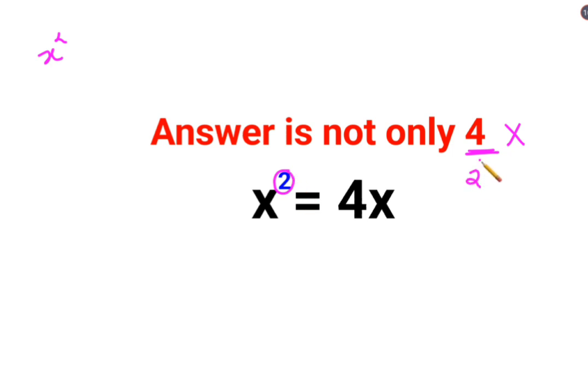So there have to be basically two answers for this question. Now how do we find this? So we will subtract 4x on both sides. So now what we'll do is we'll take x common, so I'm left with x minus 4 equals to 0.